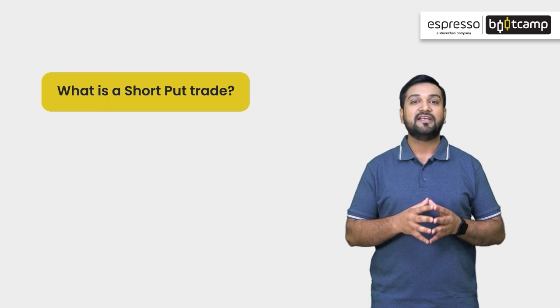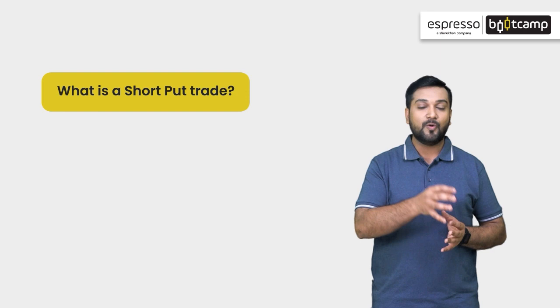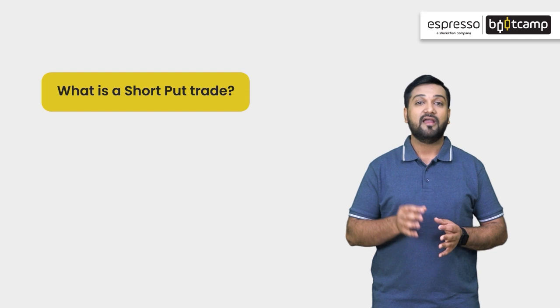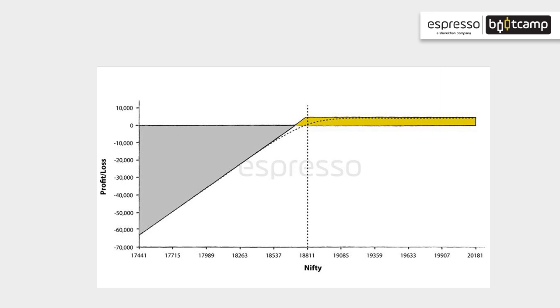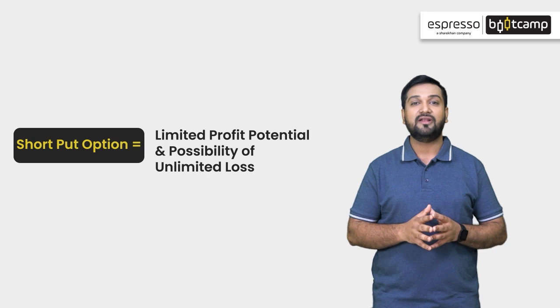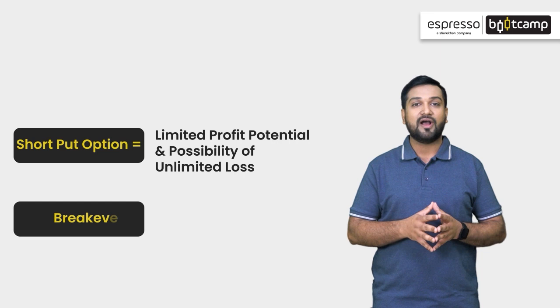Let's understand what is short put. Shorting the put option simply means selling the put option. A trader will sell the put option at a higher rate, and if the market rises, it will make put option prices fall, and the option seller will make money. If you see the payoff diagram of a short put option, you will notice that short puts have limited profit potential and the possibility of incurring unlimited loss. The break-even point is: strike price minus premium collected.